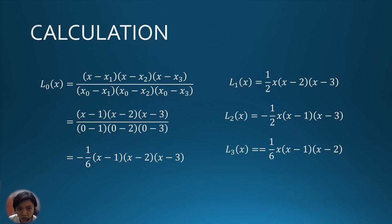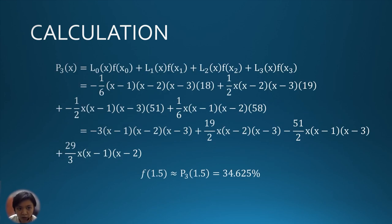Then, by using the Lagrange equation, L_0 until L_3 is calculated. Lastly, 1.5 is substituted into the general equation we calculated just now, and the probability precipitation at 1:30 pm is approximated to 34.625%.